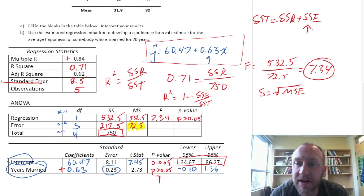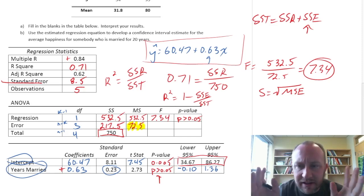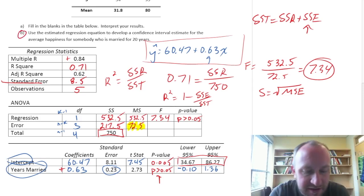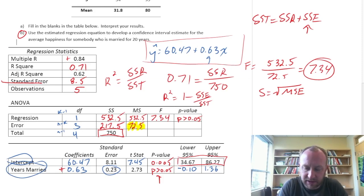That went a little bit faster than the previous ones. Hopefully it all makes sense. Really, the trick in these is just understanding how all of these different things are related to each other, being able to manipulate the formulas to solve for what's missing. So at the last part of this problem, we'll just quickly use the estimated regression equation. Develop a confidence interval estimate for the average happiness for somebody who is married for 20 years.